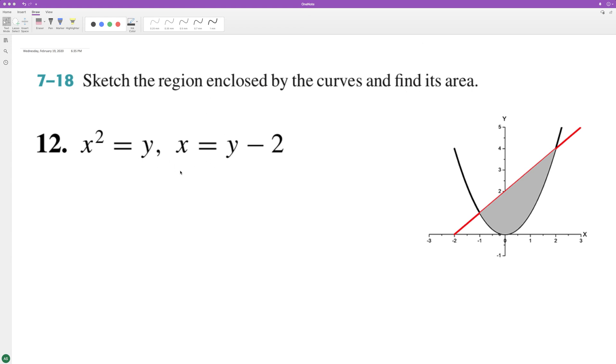We're finding the area between these two curves where they enclose a region. So rewrite this as y equals x squared and y equals x plus 2. That matches up because our intersects are right here.